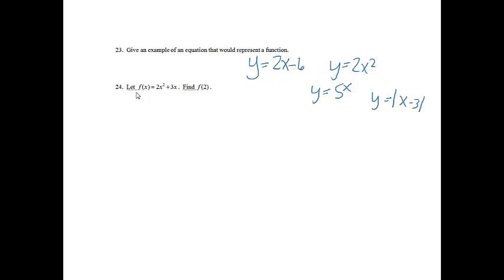Okay, and then the last one, number 24, let f of x equals 2x squared plus 3x, find f of 2. Now, please remember that f of x is only alerting us that this is a function, so we're not actually going to do anything with that part of the problem. f of 2, this is in place of the x, so we're going to go in where we see an x and plug in 2.